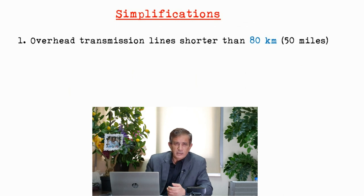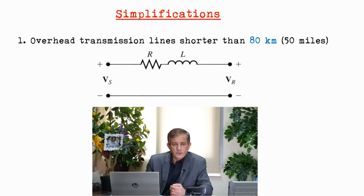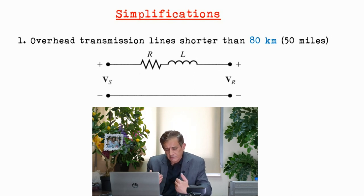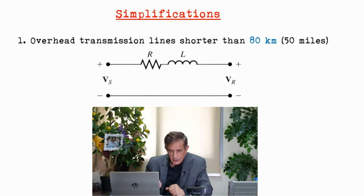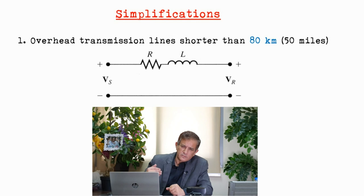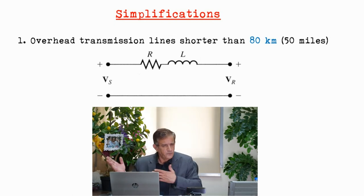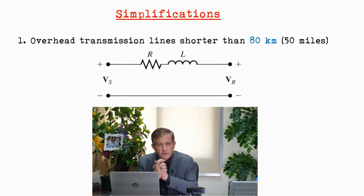For the short line, the capacitance can be easily neglected — it has a very minor value. Even for very long transmission lines, the capacitive reactance is in mega-ohm miles. When the impedance is in mega-ohms, it's almost an open circuit. So for short lines, the capacitance can be neglected easily, and this simple model is sufficient for the short transmission line.